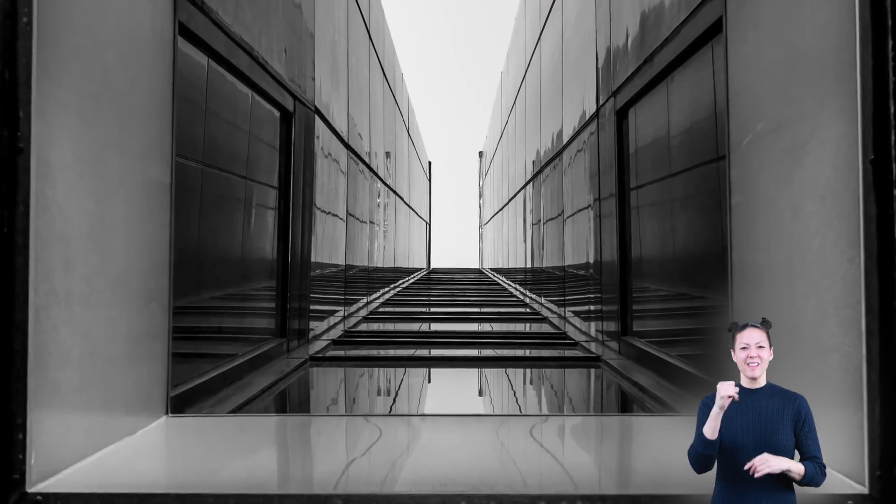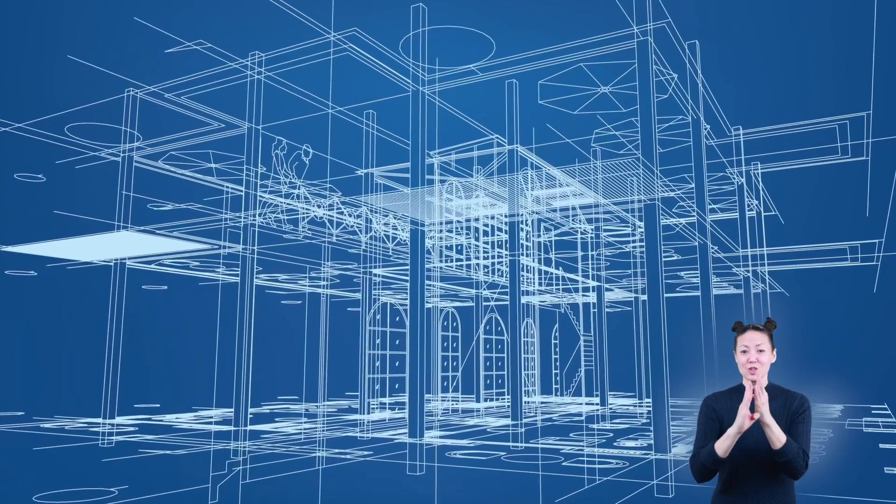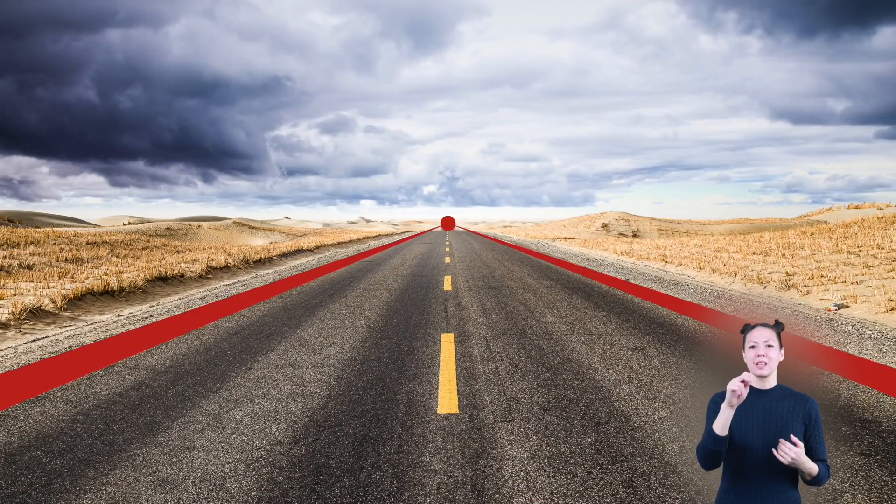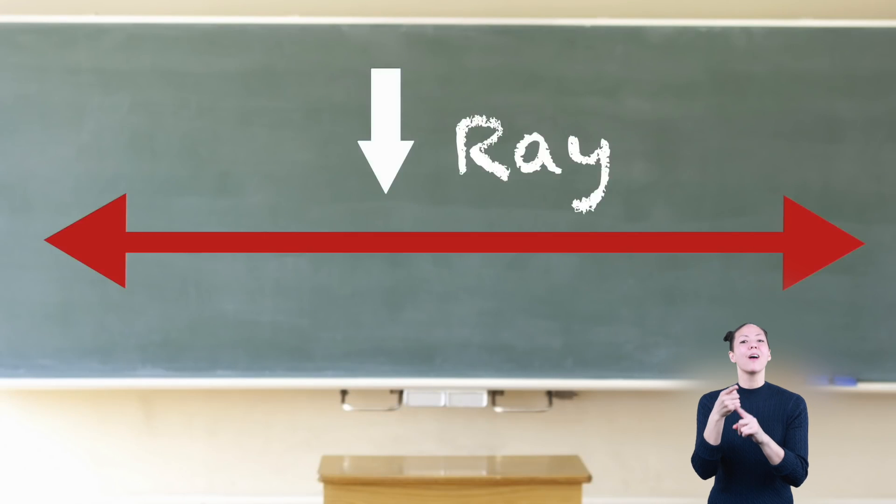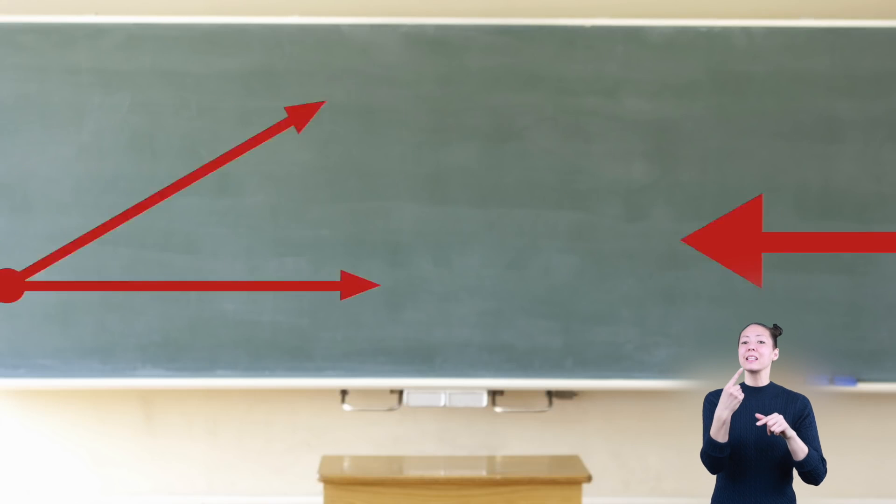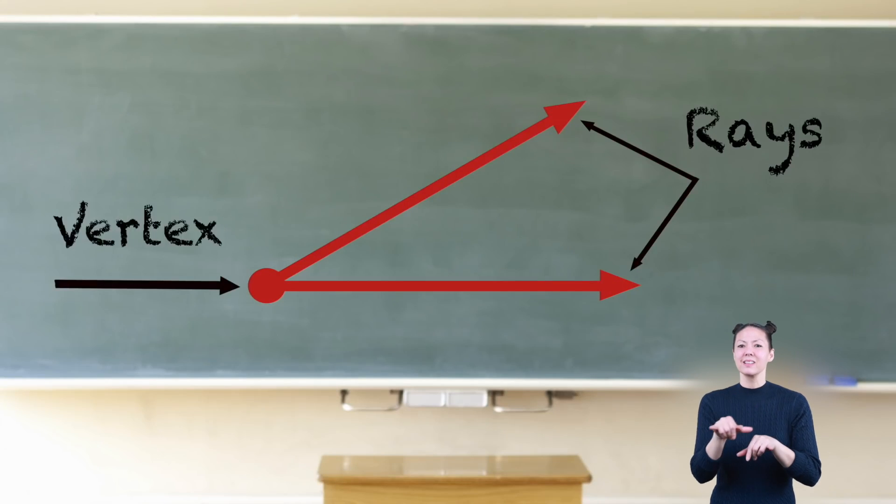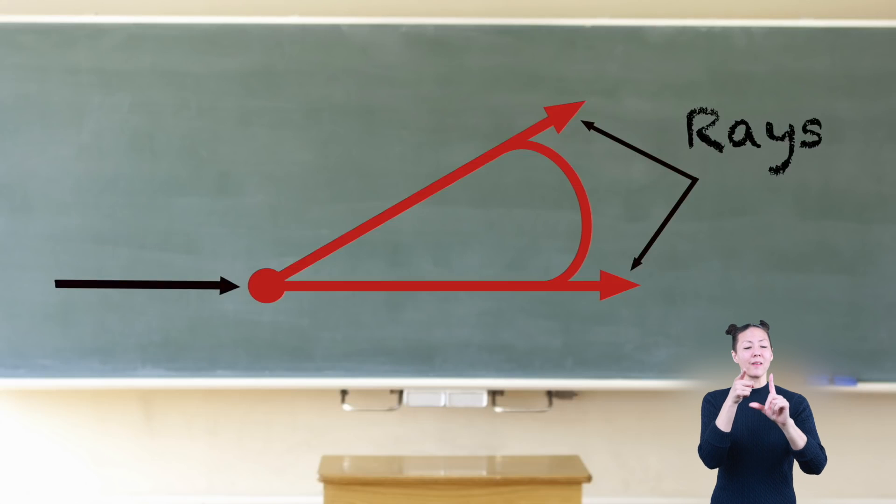Angles. There are lines everywhere. Straight lines can go on forever. Line segments have two endpoints. And then there are rays—lines used to form angles with a single endpoint. Angles are formed by two rays that share a common endpoint. An angle measures the amount of turn. The common endpoint is called the vertex.